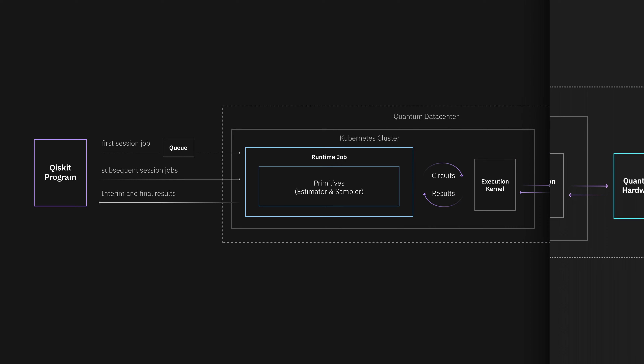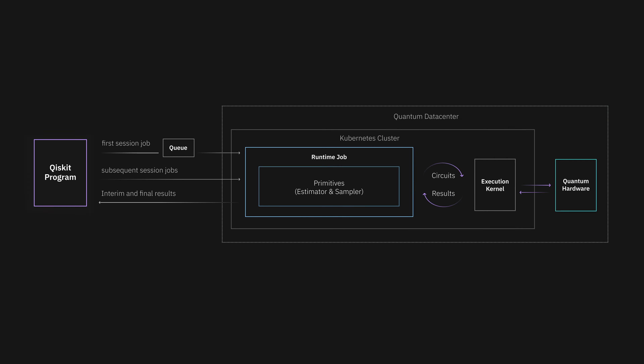After opening a Runtime session, there are several features that allow fast and efficient quantum computation, including QPriority, which gives faster access within an open Runtime session, and callbacks, which give access to interim data during a session. This level of abstraction is designed to make quantum computing useful without having to worry about all the details.